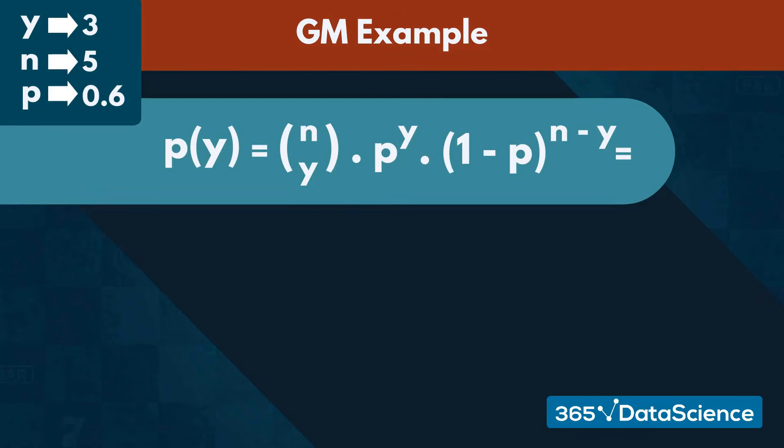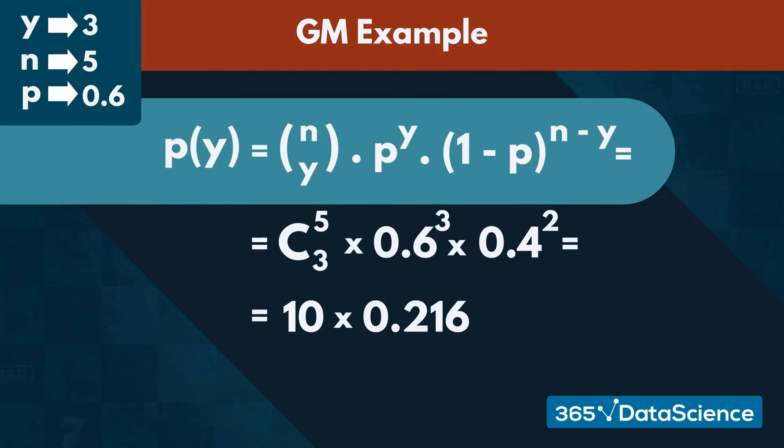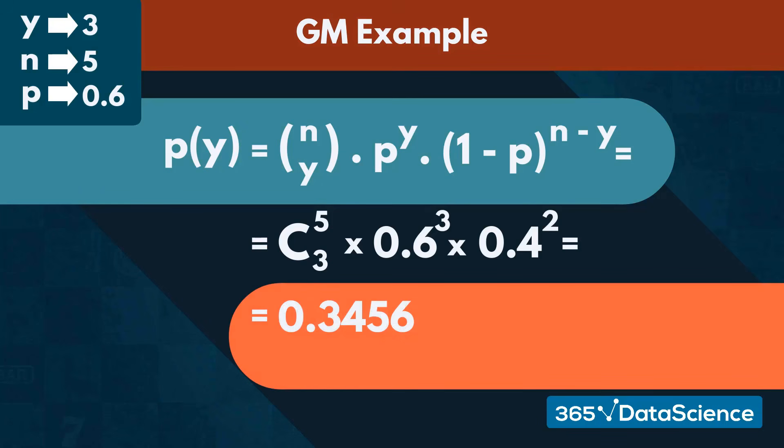After plugging in, we get the number of different possible combinations of picking 3 elements out of 5, times 0.6 to the power of 3, times 0.4 to the power of 2. This is equivalent to 10 times 0.216 times 0.16, or 0.3456.